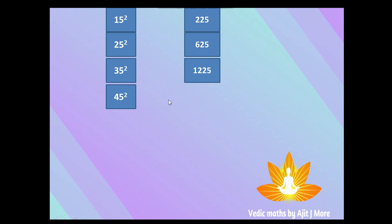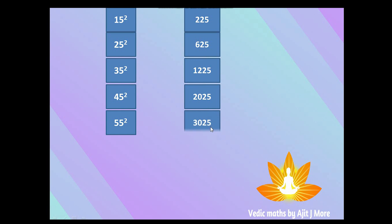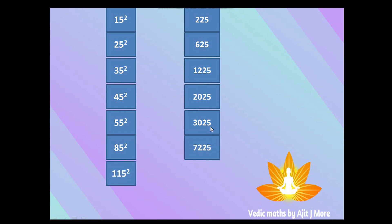Continuing: 85 squared — after 8 is 9, 8×9=72, join with 25 → 7225.